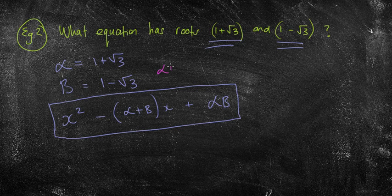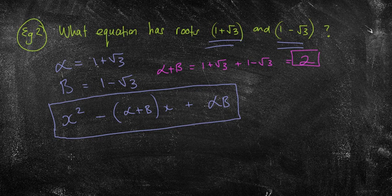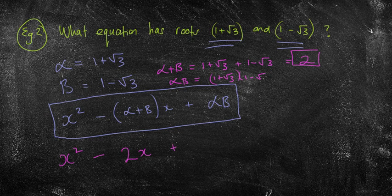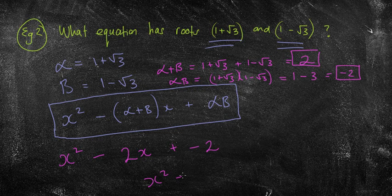Alpha plus beta is (1 plus root 3) plus (1 minus root 3). That gives 1 plus 1 equals 2, with root 3 minus root 3 cancelling to nothing, so alpha plus beta equals 2. Then alpha beta is (1 plus root 3)(1 minus root 3), which is the difference of two squares: 1 squared minus root 3 squared equals 1 minus 3 equals negative 2. So the equation is x squared minus 2x minus 2 equals 0.